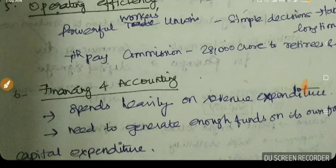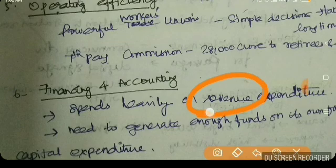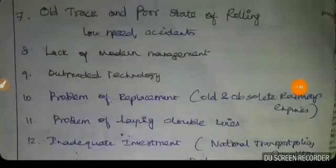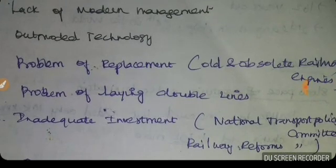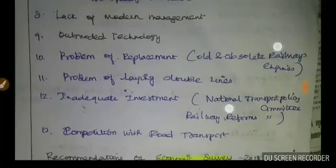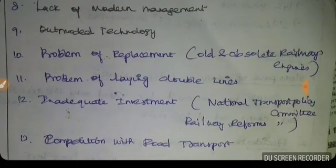Sixth, financing and accounting — capital expenditure is low compared to revenue expenditure, making it hard to generate funds. Seventh, old track and poor state of rolling stock inherited from the colonial era lead to low speed and accidents. Eighth, lack of modern management — still using older practices and outmoded technology. Ninth, problem of replacement — older engines using obsolete technology still in use because replacements are delayed.